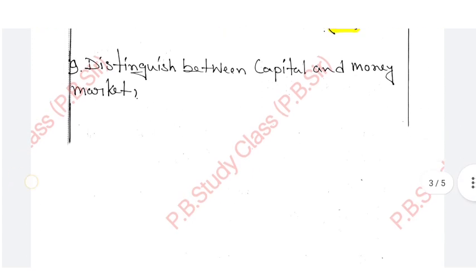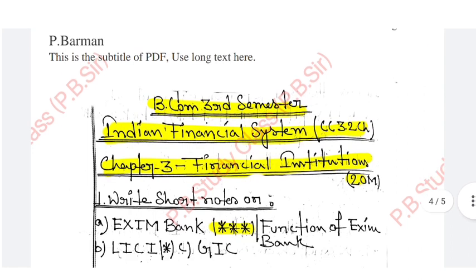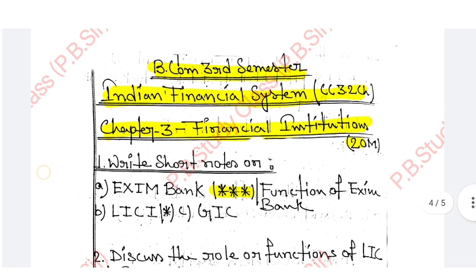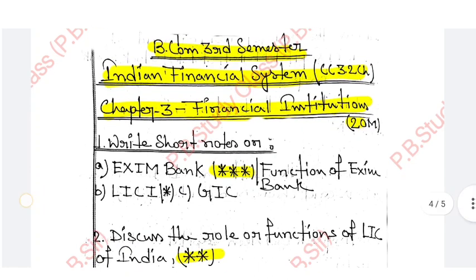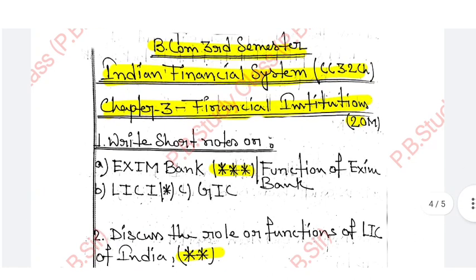Now let's look at Chapter 3 of Indian Financial System — Financial Institutions. This was 20 marks but now covers 10 marks. Topics include: write a short note on Exim Bank, function of Exim Bank, LIC and GIC.